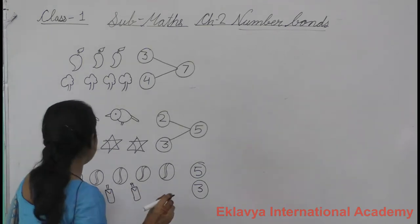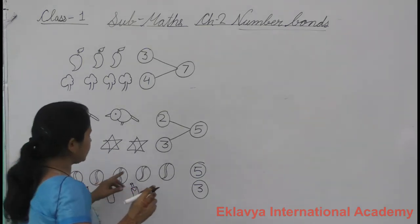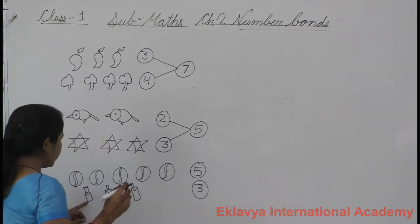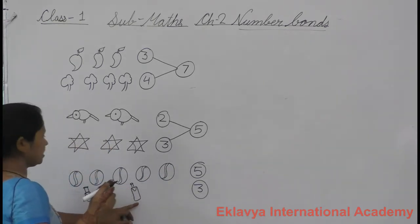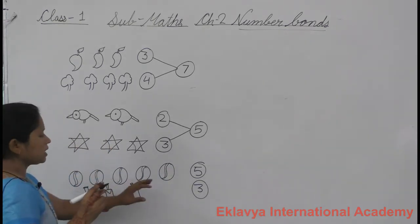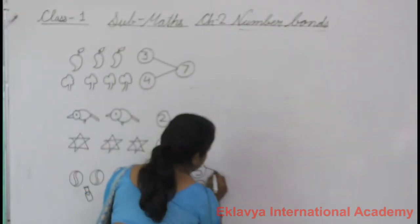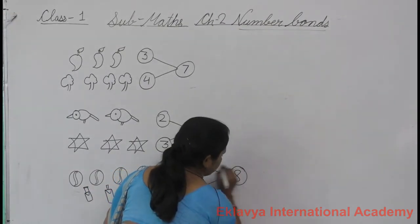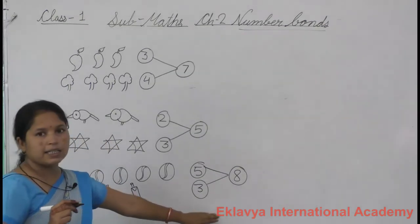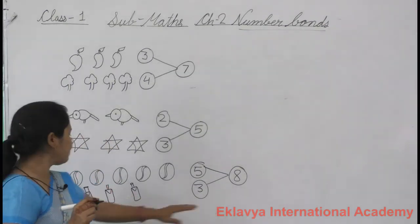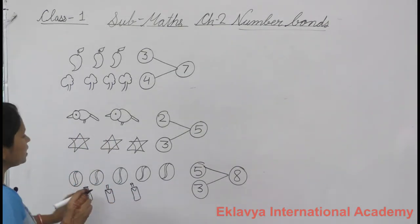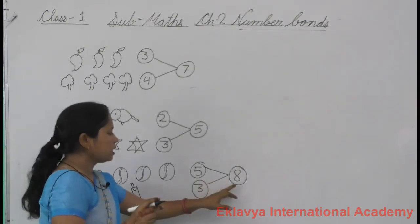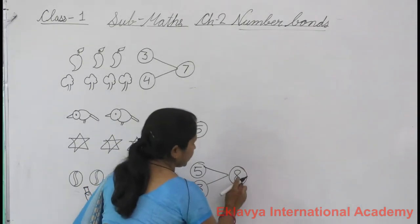Count. One, two, three, four, five, six, seven, eight. Eight. Understand this? Five balls, three bats. Count and put the number eight.